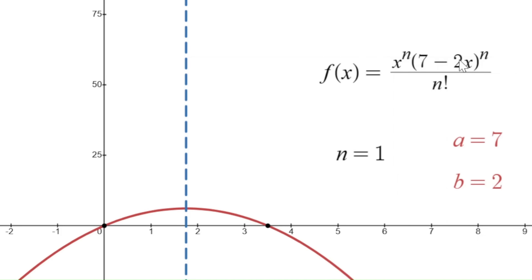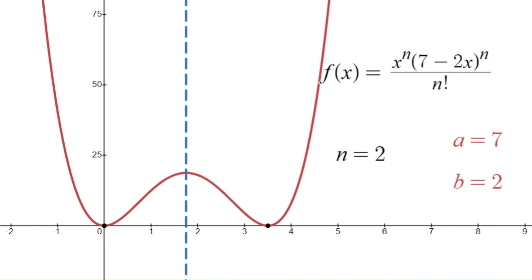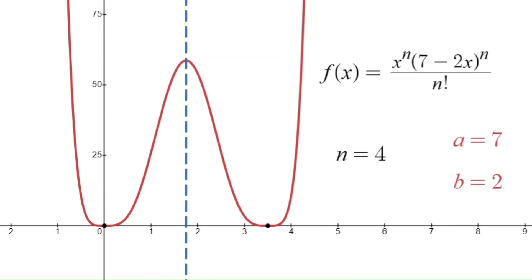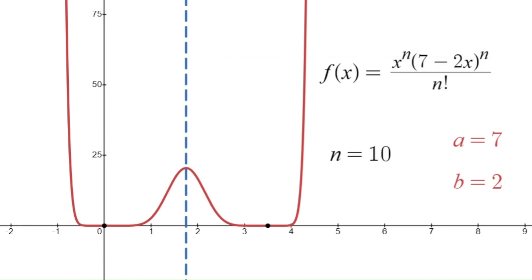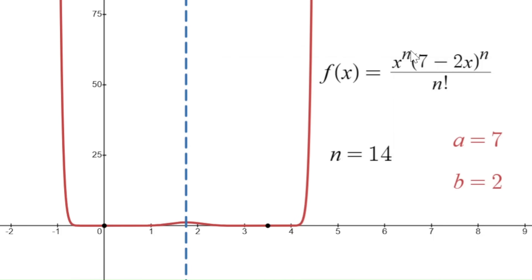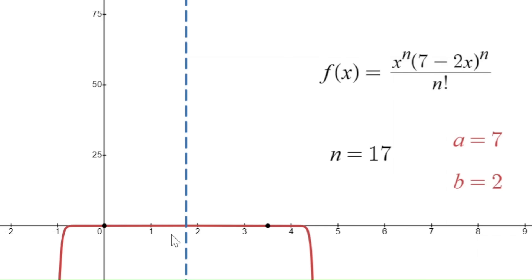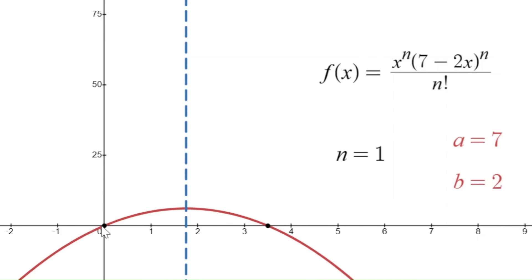When N is 1, we just have a quadratic function — it's really just x times (7 minus 2x) — and we have zeros at 0 and at 3.5, or 7 halves. The axis of symmetry lies halfway between those two zeros, at 1.75 or 7 fourths. This is the interval we're interested in: from 0 to 3.5, or 0 to 7 halves. When N is 2 we get a fourth-degree polynomial, and as N gets bigger, the functions initially start going up because of these N's in the numerator, but eventually get squished down towards 0 because N factorial starts taking over.